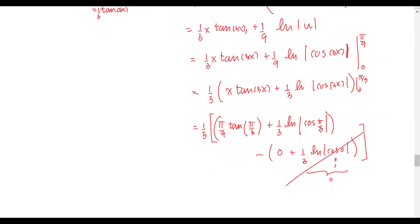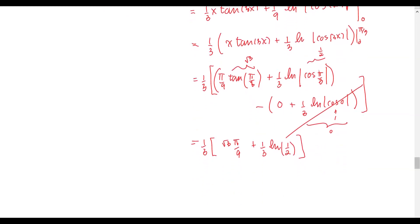The tangent of pi over 3, which is 60 degrees, equals square root of 3, and the cosine of pi over 3, which is 60 degrees, equals one half. Simplifying, we get one third times the group: square root of 3 times pi over 9, plus one third times natural log of one half. Since natural log of one half equals negative natural log of 2, we can rewrite the final answer as square root of 3 over 27 times pi, minus one ninth times natural log 2.